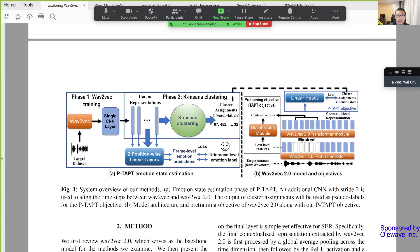They first send speech into the Wav2Vec model and come up with an embedding representation, passing through a CNN layer. Then they get some latent representation of the utterance, frame-level or frame-by-frame. Then they pass it through two pointwise linear layers, and they call these frame-level emotion predictions.